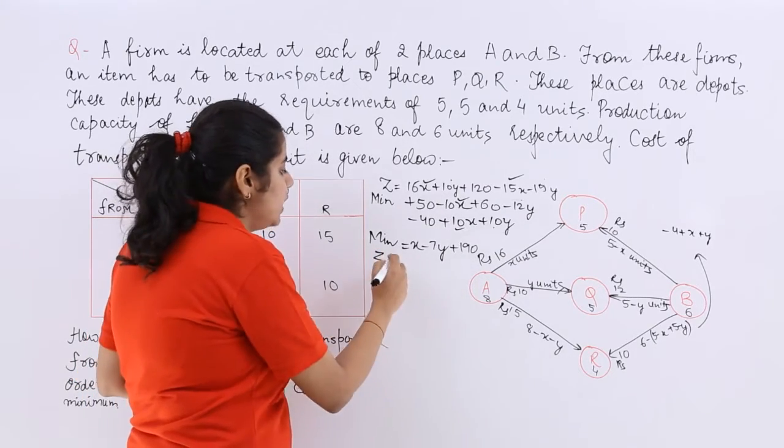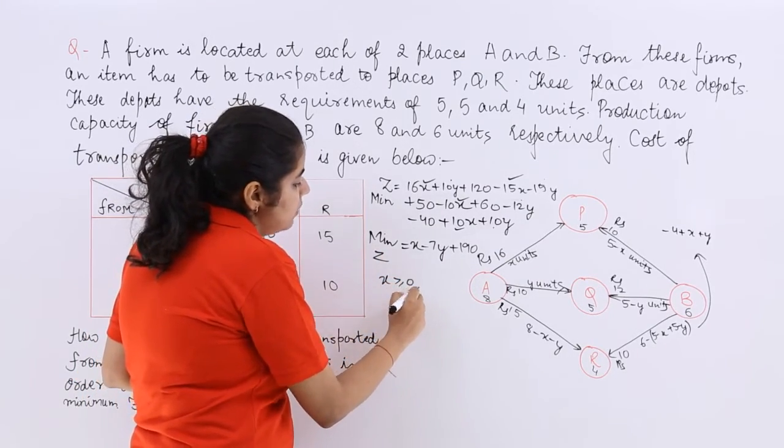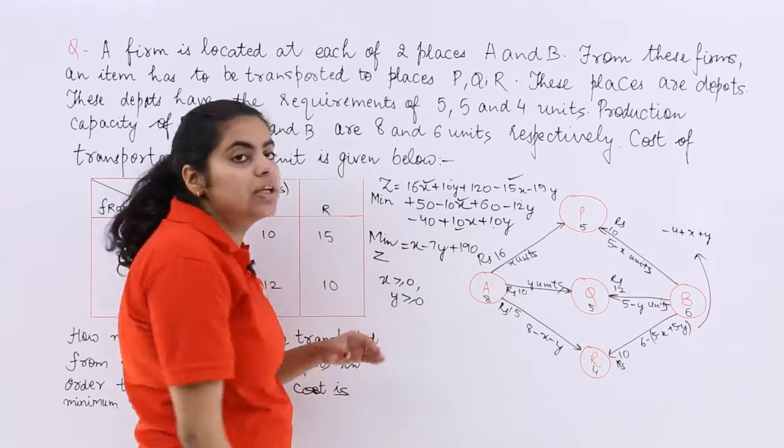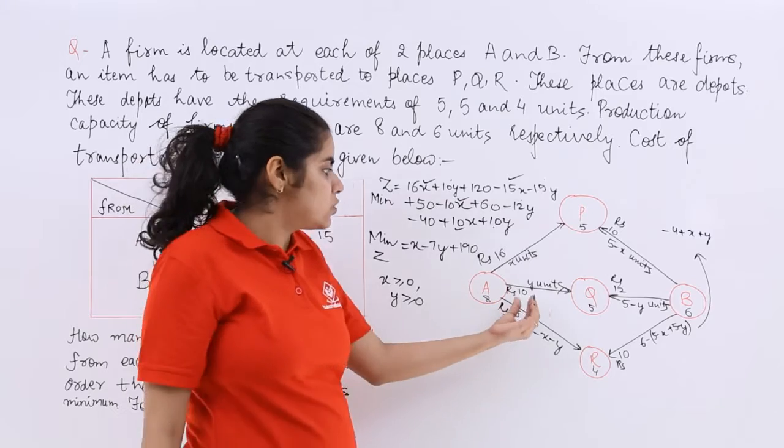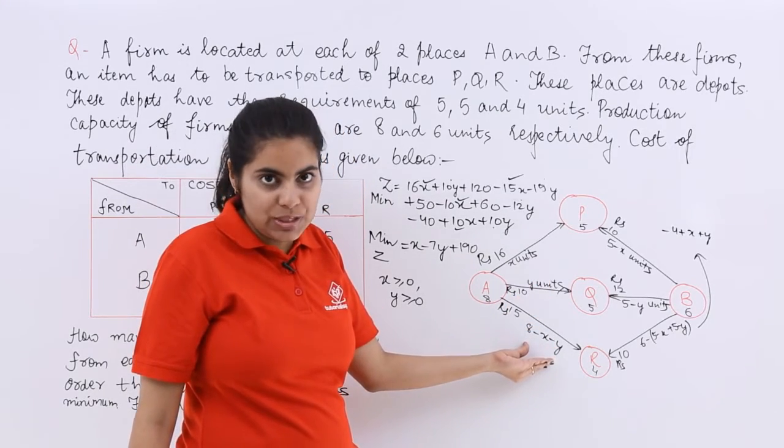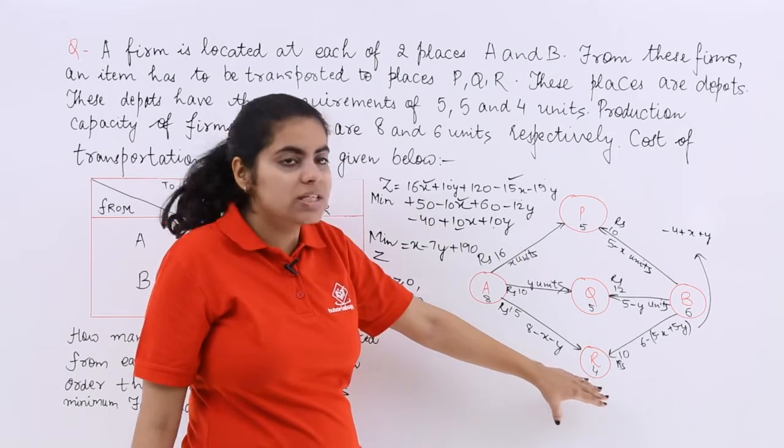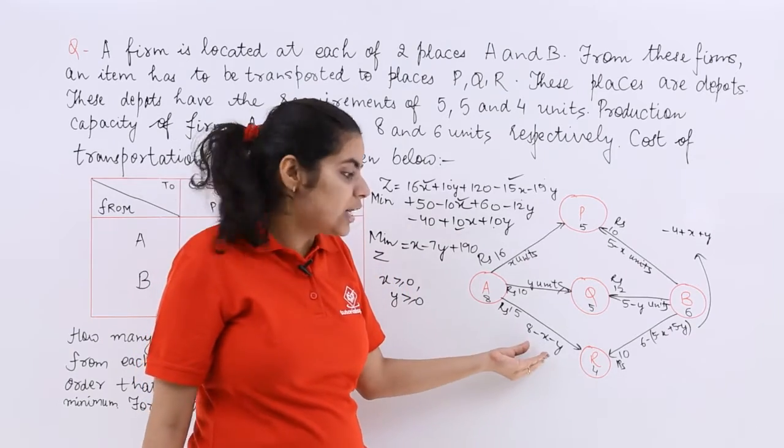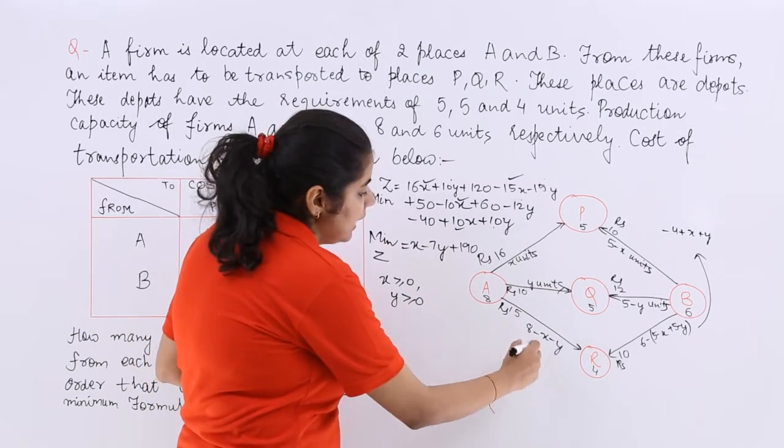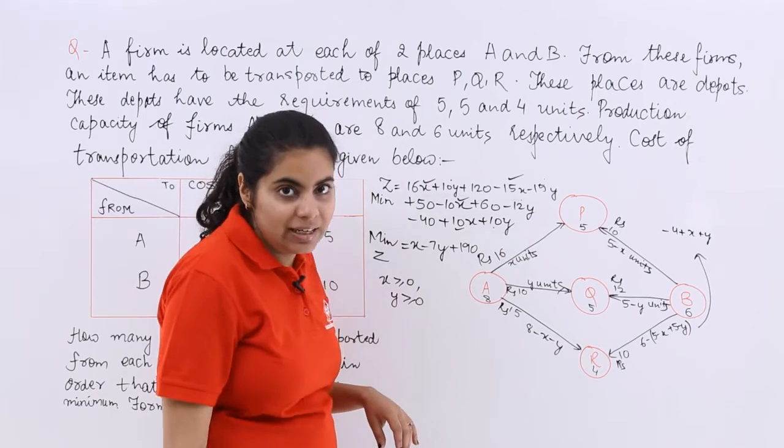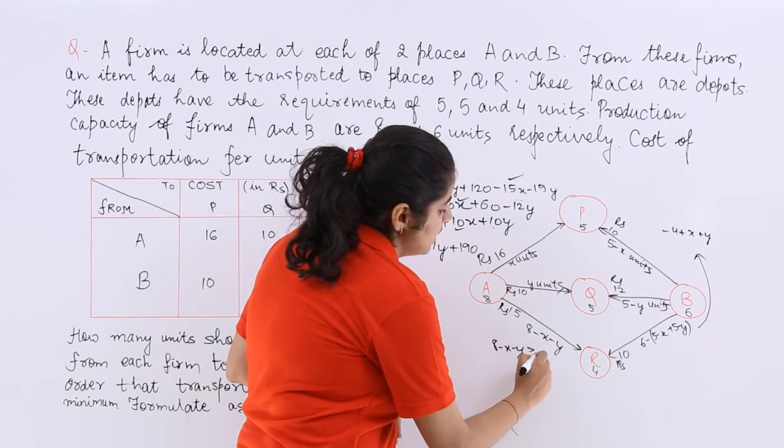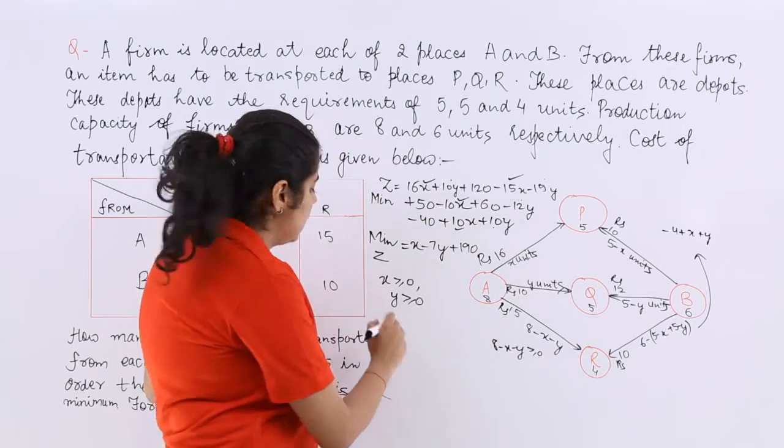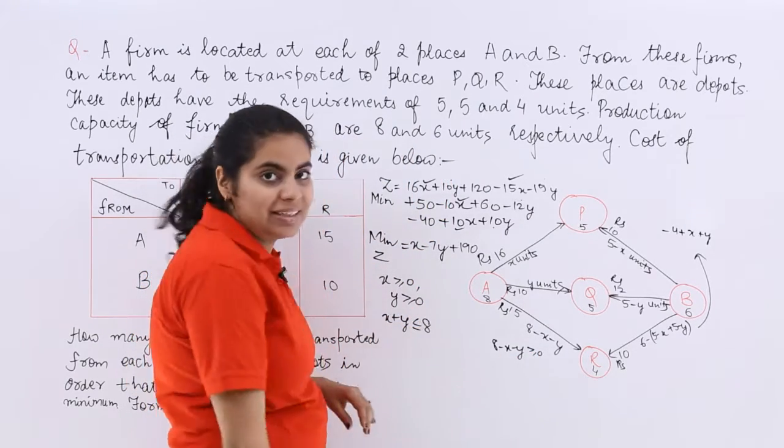Now if Z is known, I already know that my X and Y should be greater than equal to 0. The units can never be negative. Next constraint, these all constraints should be greater than equal to 0 because the passage is there and these units cannot be negative. So again, 8-X-Y is greater than equal to 0. 8-X-Y is greater than equal to 0. Then I say that X plus Y is less than equal to 8.